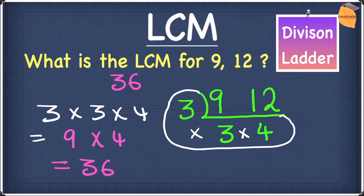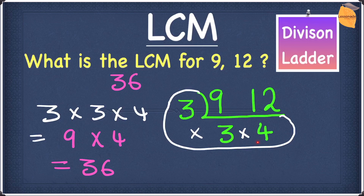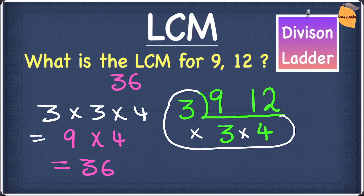A way of verifying this is by multiplying the bottom left-hand number by the top right number. So three times twelve — does it give you thirty-six? Yes it does. Another way is multiplying the bottom right-hand number, which is four, by the top left number, which is nine. Nine times four — does it give you thirty-six? Yes it does. So we can safely say the LCM for nine and twelve is thirty-six.